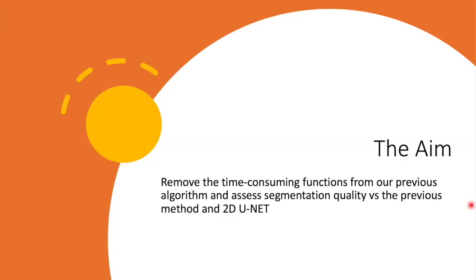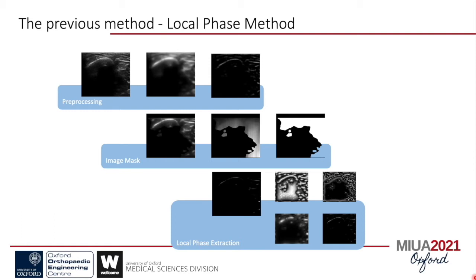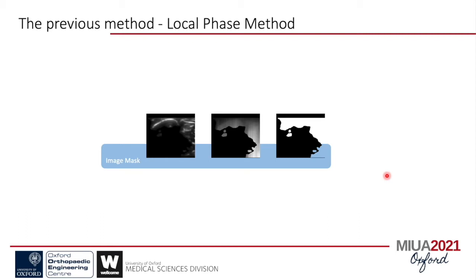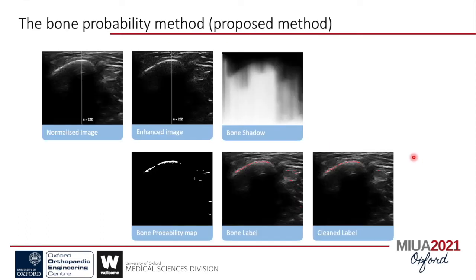Therefore, the aim of this study was to remove the time-consuming function from our previous algorithm and assess segmentation quality versus the previous method and 2D U-Net. We tried to remove the first and third parts of the algorithm, focusing instead on the bone shadow and masking. The new method has a simplified processing step: adjust contrast, enhance the edge, generate bone shadow, and then generate a bone probability map by combining these three images. Based on this map, we label the bones and clean noisy labels.